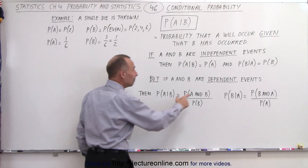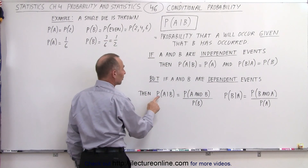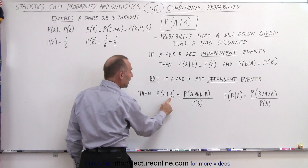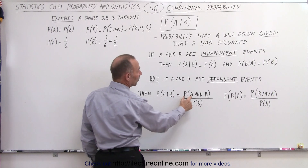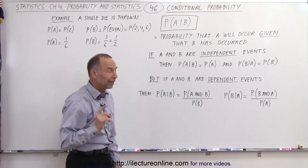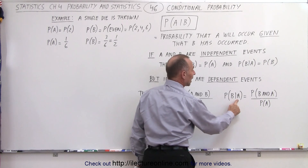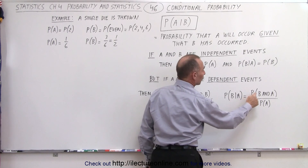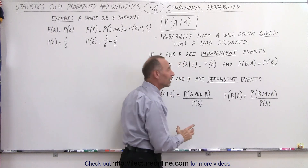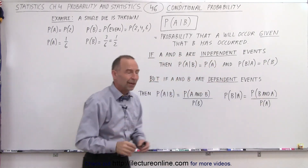If A and B are dependent events, then the probability that A will occur given that B has occurred equals the probability of A and B divided by the probability of B. And the probability that B will occur given that A has occurred equals the probability of B and A divided by the probability of A. Of course, P(A and B) and P(B and A) give you the same probability.